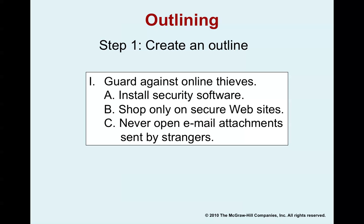Let's look at the steps in more detail. Step one is to create the outline. An outline is not a word-for-word script - it's just a skeleton of the key ideas. For instance, a first point might be 'guard against online thieves,' followed by three sub-points: install security software, only shop on secure websites, and never open email attachments from strangers.